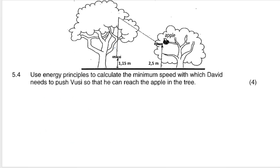Question 5.4 asks us to use energy principles to calculate the minimum speed with which David needs to push Vusi so that he can reach the apple in the tree — four marks. Because it's four marks and they say to use energy principles, we know we're going to be using the principle of conservation of mechanical energy, which is the only energy principle you know in Grade 10.